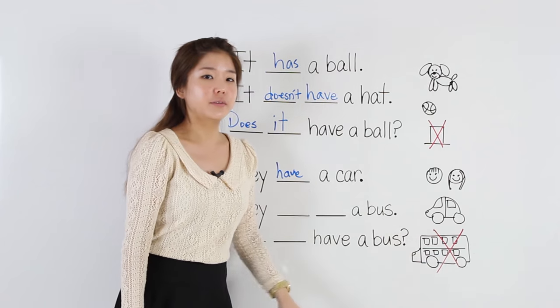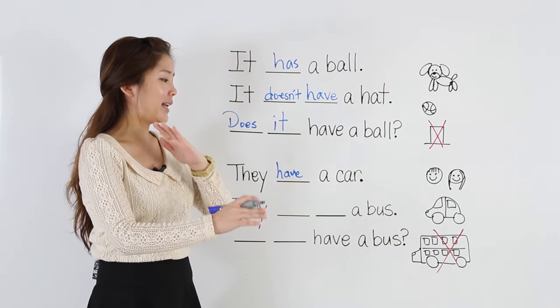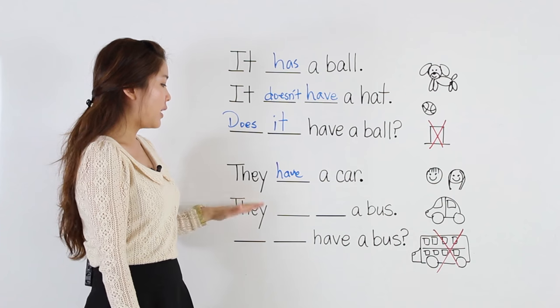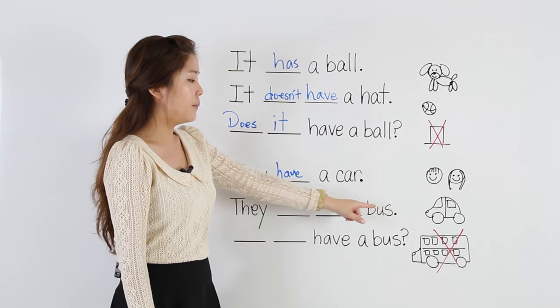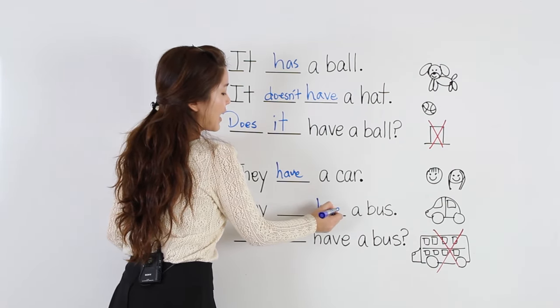Here, there's a bus, but again, it says no. Negative. They, blank, blank, a bus. Again, for negative, we say have.